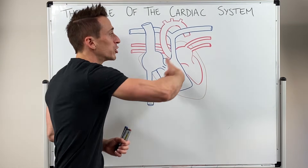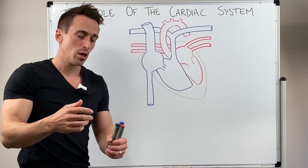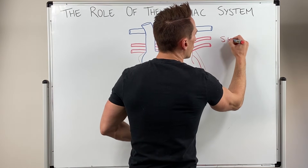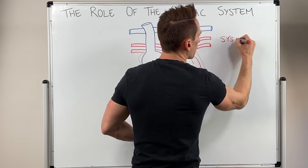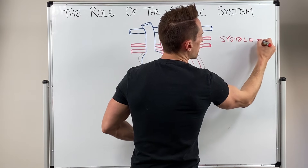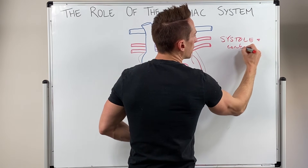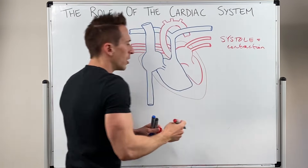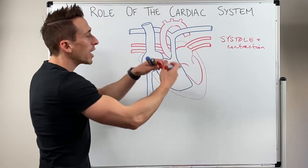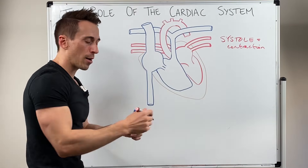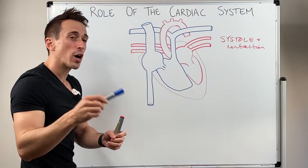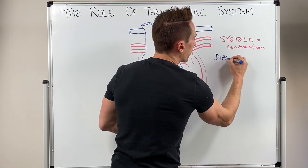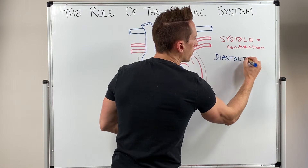When the heart contracts to eject this blood, the term we use is systole. Systole is the contraction of the heart to eject that blood. Then after a contraction the heart needs to relax and fill up with blood, and this is what we call diastole. Diastole is the relaxation or filling of the heart.